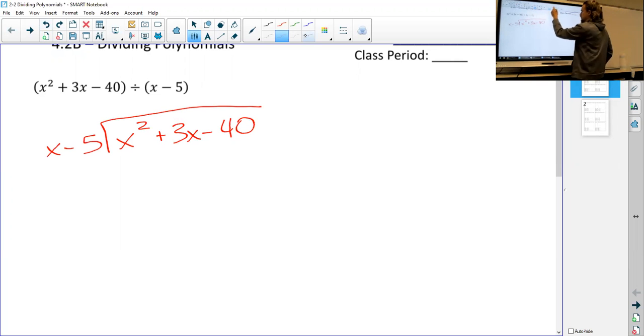Since I have two terms on the outside, I'm going to go two terms at a time on the inside. Here's the trick: I want to know what I would have to multiply x by to get me to x squared, or what's x squared divided by x. Either way, we get x.